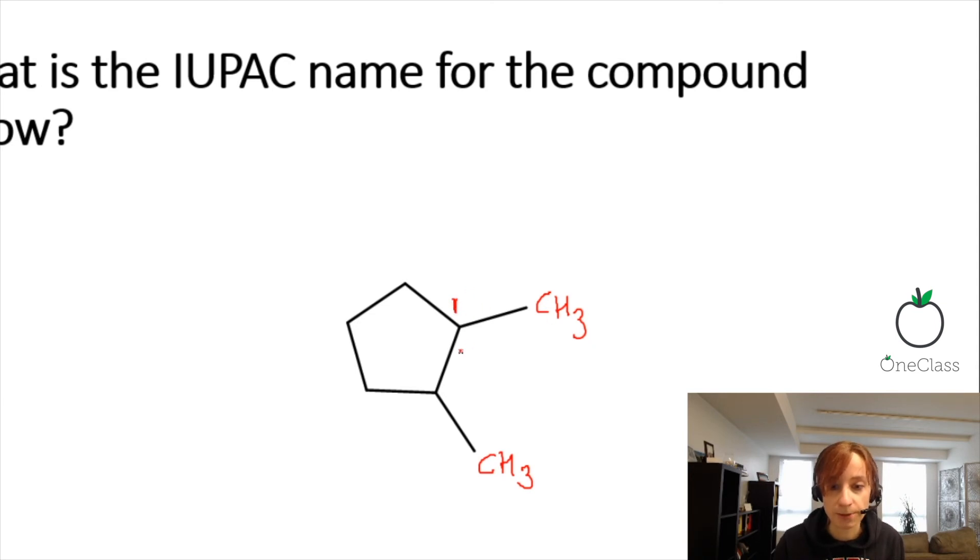We could put two here, but then this methyl group would end up as number five, and we want it to be a shorter number. So this is two, three, four, five.